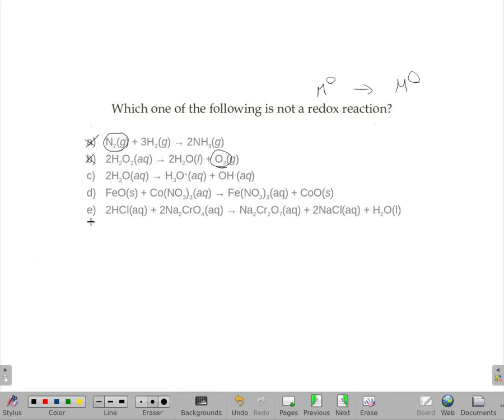Now on D and E, we have metals. On D, the iron in this iron oxide would have to be 2+ since oxygen is -2. Yet this iron would have to be 3+ to take care of those three nitrates. The only way that's going to happen is if electrons exchange. So that is a redox as well.